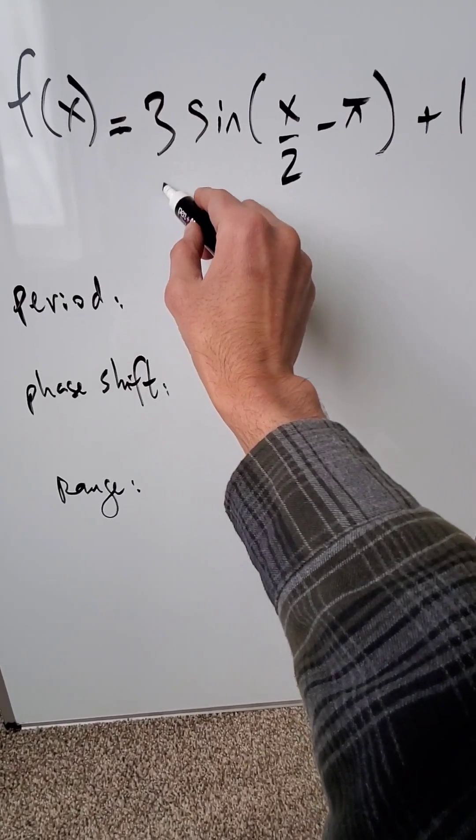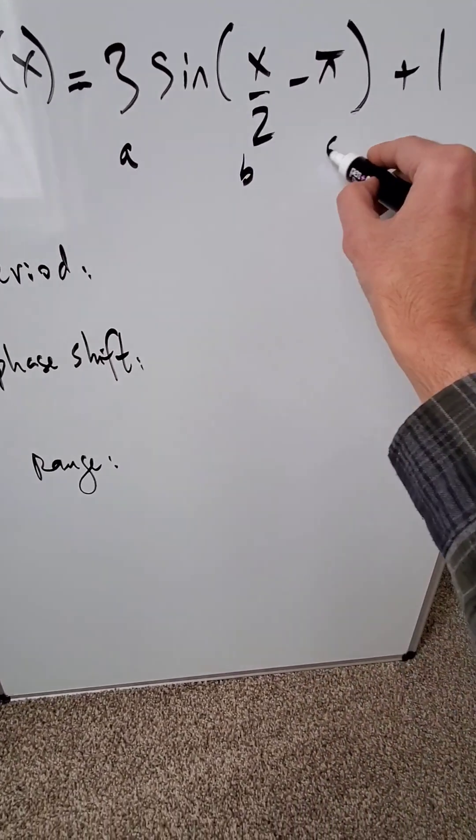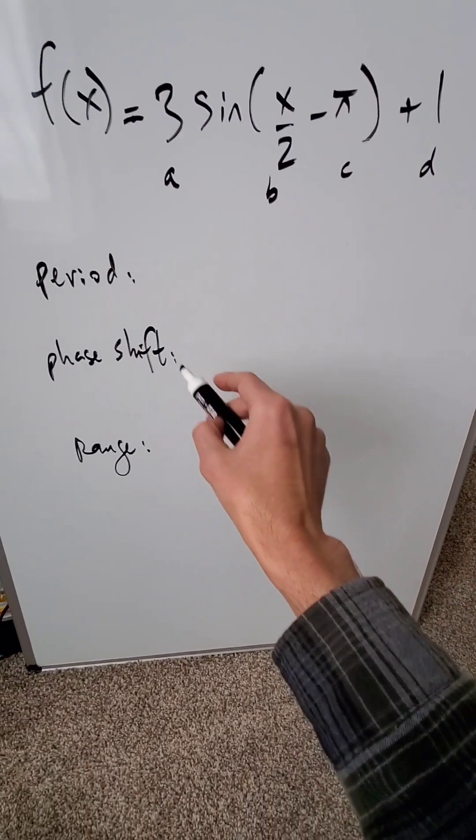In terms of the anatomy, this represents your a value. Here's your b, here's c, and here's d. We will talk about those.